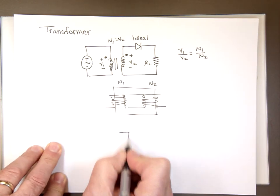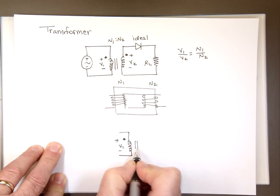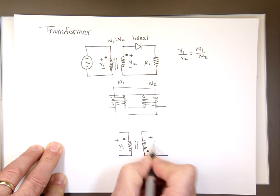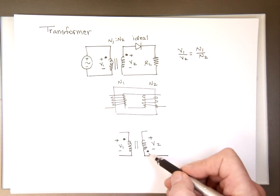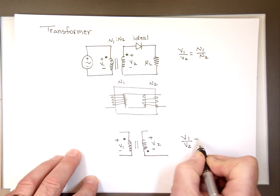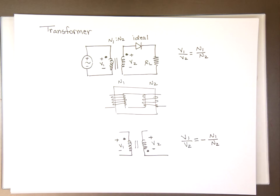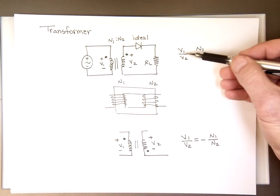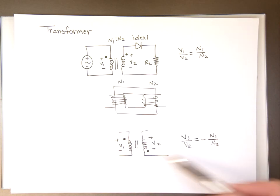What happens if these dots are reversed? For V1, the dot was positive. For V2, the dot was negative. So in this case, the relationship of V1 to V2 is going to be negative N1 to N2. If the dots have the same sign, both positive or both negative, the relationship is positive. If one of them is positive and the other is negative, the relationship is negative.